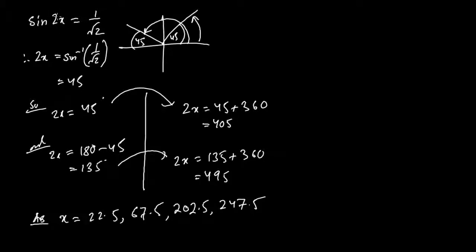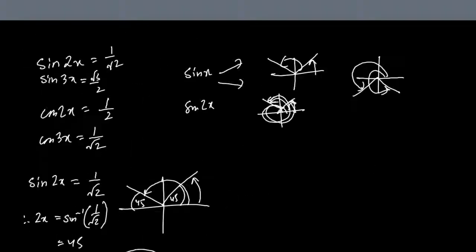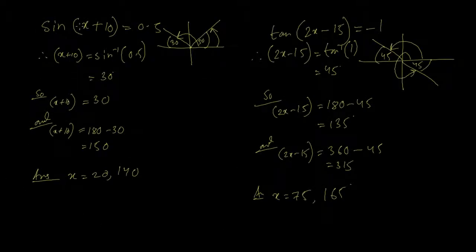To summarize: whenever you have multiple angles (like 2x or 3x), treat the multiple as the basic angle and add 360 degrees to get additional answers — giving four answers instead of two for 2x. For compound angles, whenever something is added or subtracted, keep the angle intact and only break it down at the final answer step.